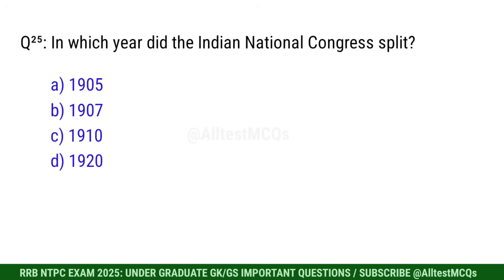Q25. In which year did the Indian National Congress split? Correct option is B. 1907.